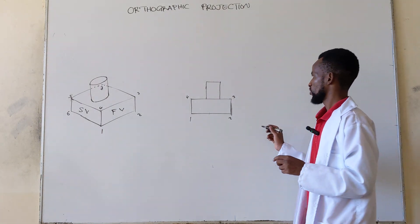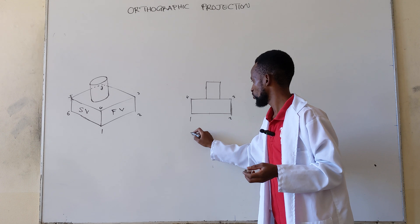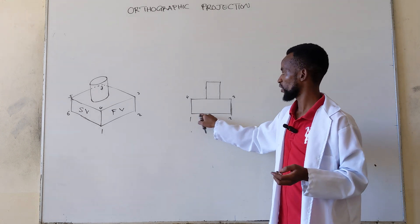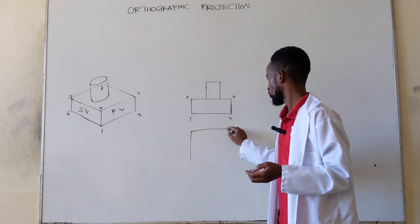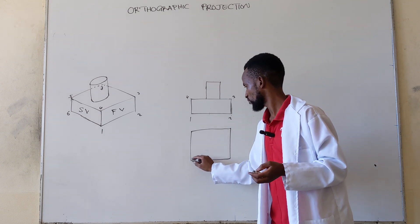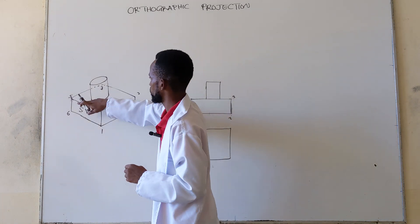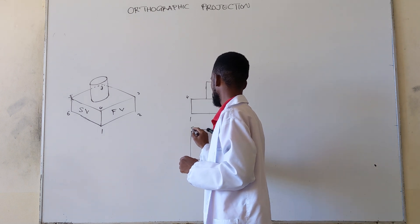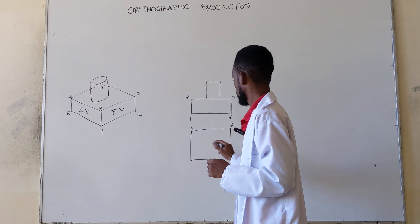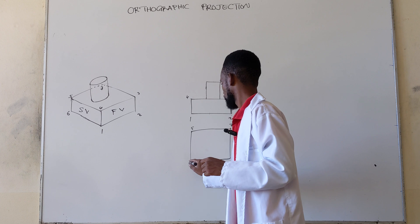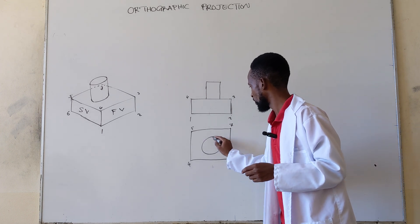Let's look at the top view. When you look at it from the top, the top will get its length from this one here. So if this is the front, then the top we're going to have dimensions five, seven — so five and seven — and then four and three there. And then we're going to have a circle there in the top view.